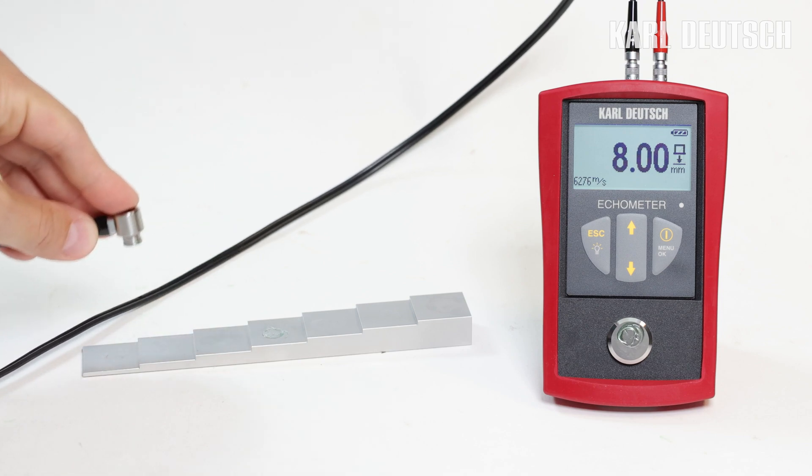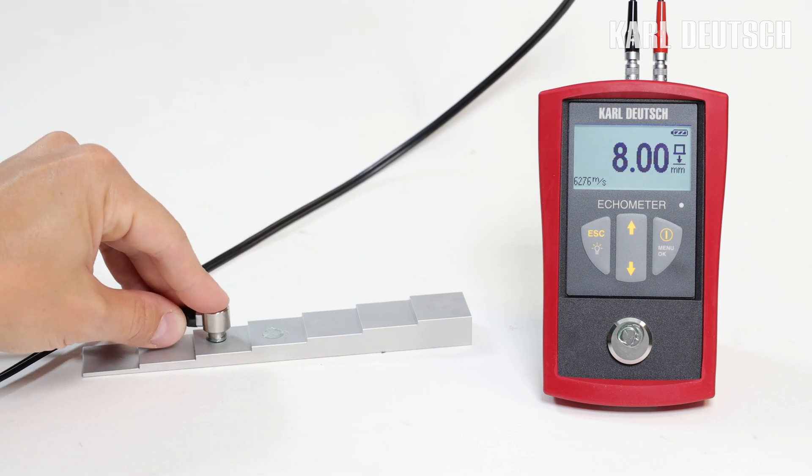With a material-specific sound velocity, an accurate wall thickness measurement can now be carried out.